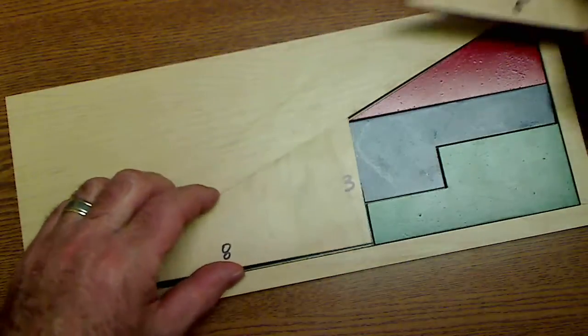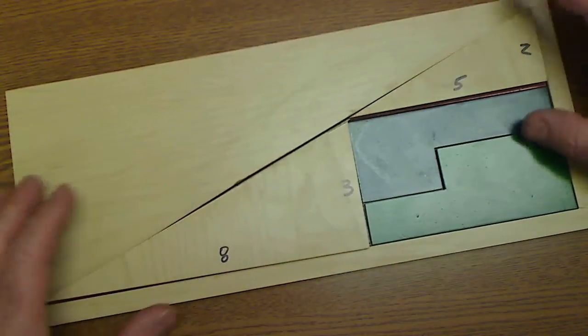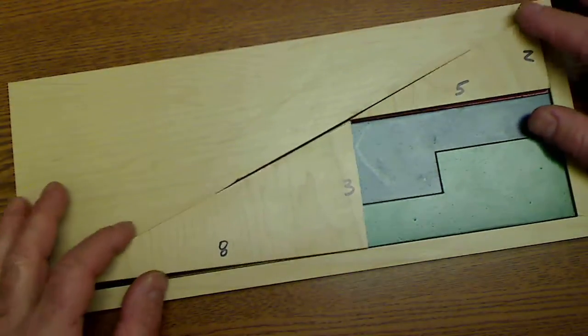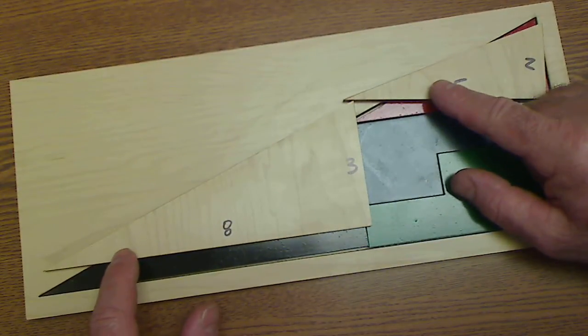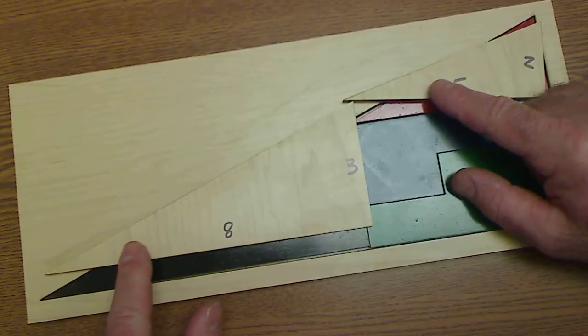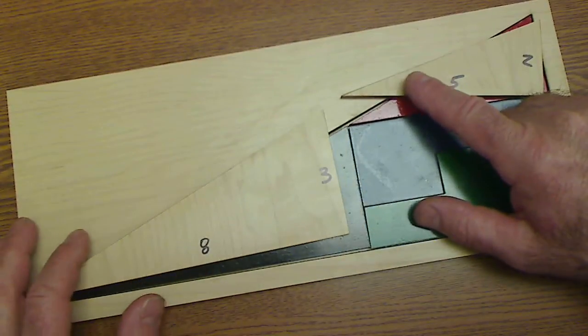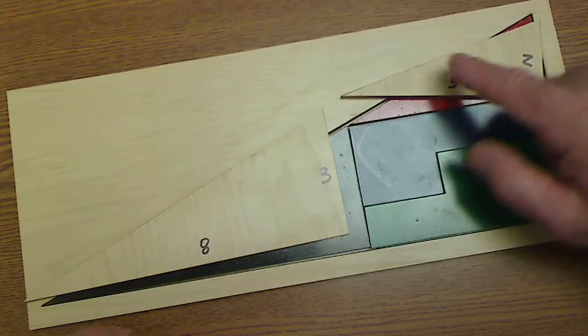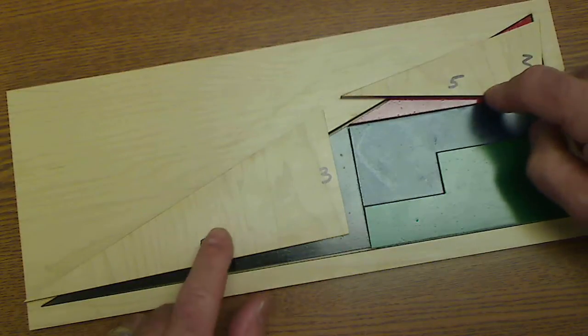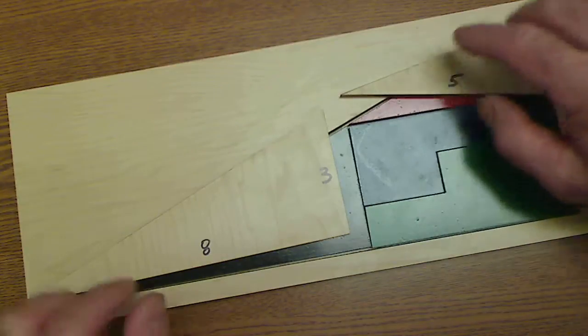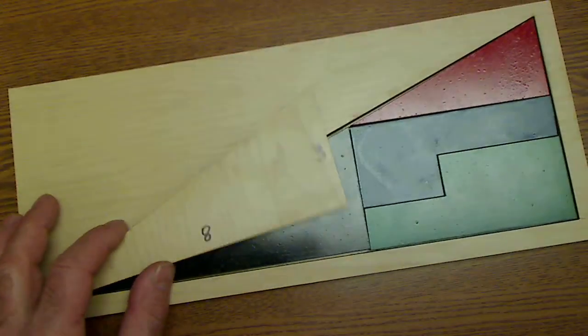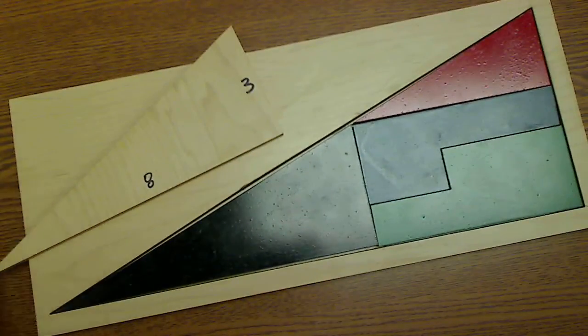So this black triangle is eight by three, this red triangle's five by two, and if you were to find these angles you could see it'd be the arc tangent of three eighths to give you this angle versus the arc tangent of two fifths. And you'll see that there's a ratio of 0.4 and this ratio 0.375. So this is going to be a little bit bigger of an angle. So that's the missing square puzzle.